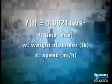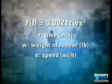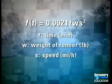F of T equals 0.0021 times T times W times S squared. Here, T equals time in minutes, W equals the weight of the runner in pounds, and S equals the speed of the runner in miles per hour.